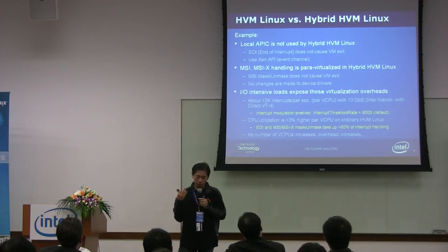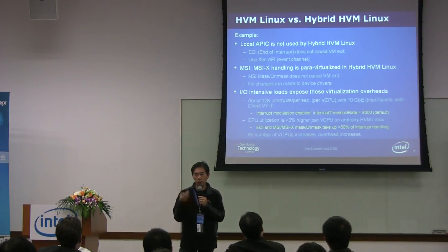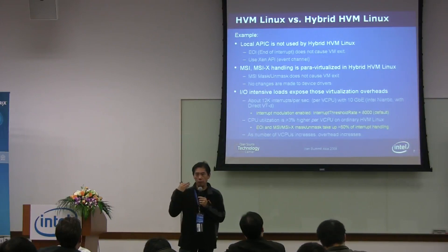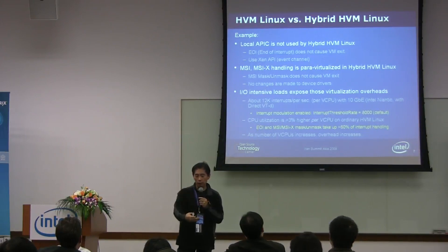Now, a modified HBM path typically uses loco-epic upon end-of-interrupt, so called an EOI. And loco-epic is virtualized. Now, writing to the EOI register poses a VM exit.